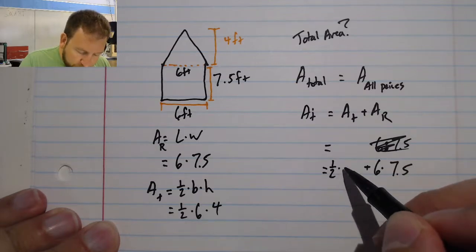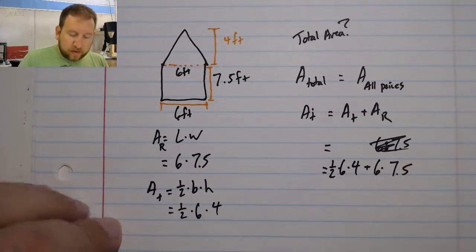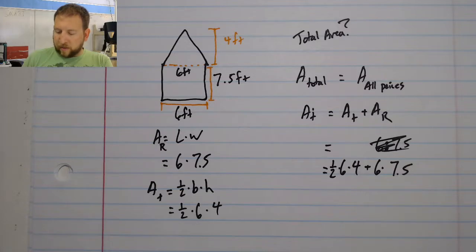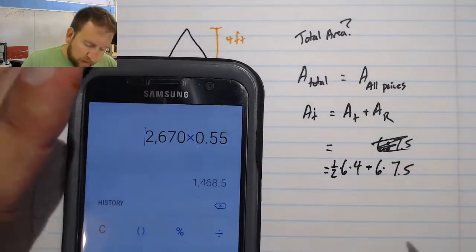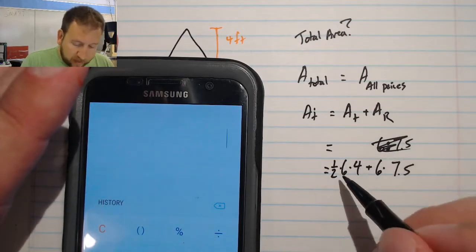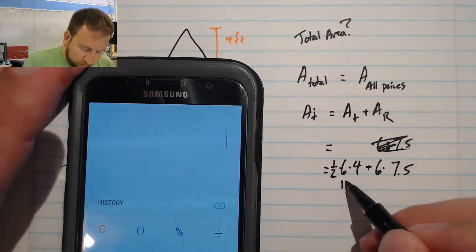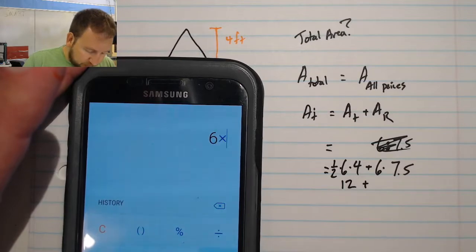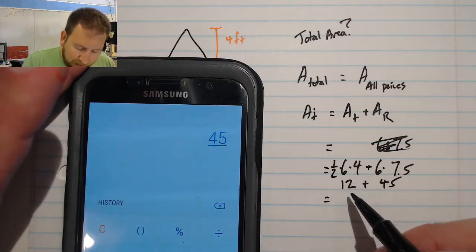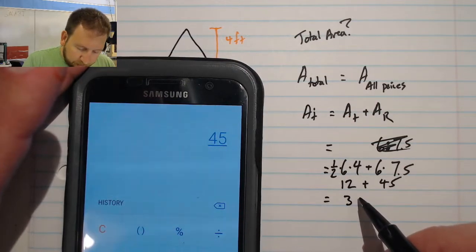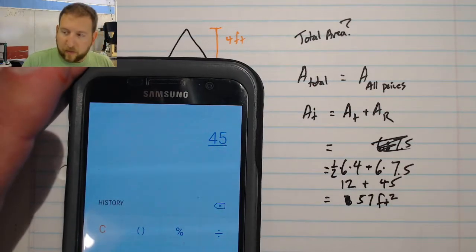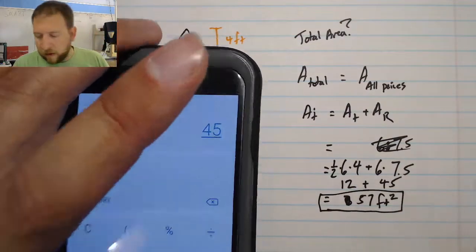And I can just add that in to get my total area. So now I have 1 half times 6 times 4 plus 6 times 7.5. Let me load up my calculator. 6 times 4 is 24. Times a half is 12. 6 times 7.5 is 45. Add these together and I have 57. And recall that I'm going to be adding in my units, and in this case, my units are 57 square feet.